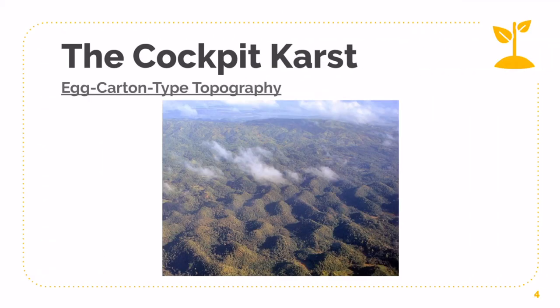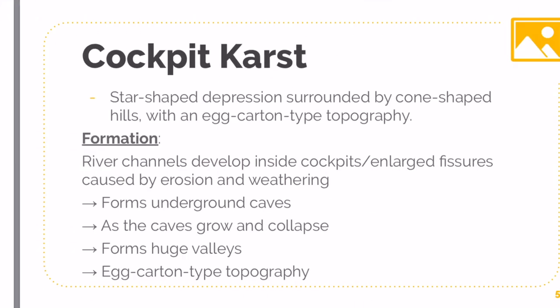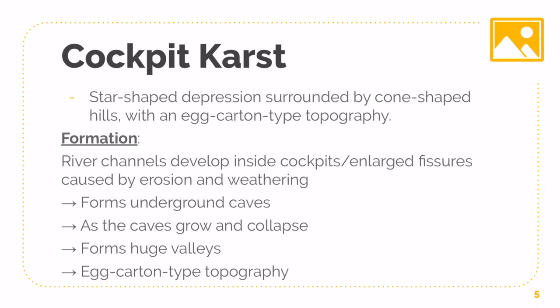The first thing you need to know is that the Cockpit Cast possesses an egg-carton type topography. Looking at this image — this is the Chocolate Hills — it looks like an egg carton flipped around. So what exactly is a Cockpit Cast landscape? Essentially, it is star-shaped depressions surrounded by cone-shaped hills with an egg-carton type topography. Basically, a Cockpit Cast is a bunch of immature, very young Cone Cast that are coming together.